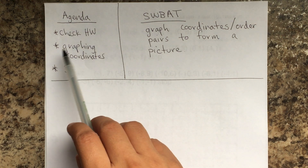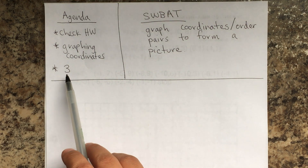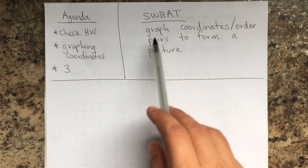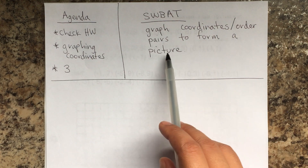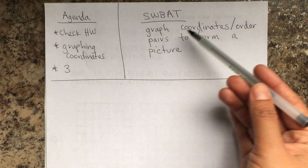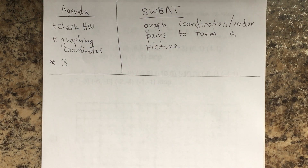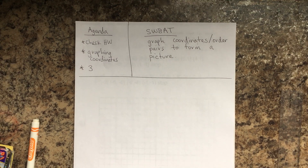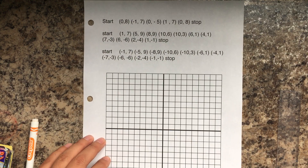Hello students, today's agenda is to check homework. We'll be graphing coordinates, and you will be able to work on page 3. Students will be able to graph coordinates, also called ordered pairs, to form a picture. They are also called points, so coordinates, ordered pairs, or points all refer to the same thing. In the next lesson you're going to learn more about the coordinate plane, but today we're basically just graphing coordinates to form a picture.